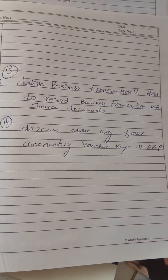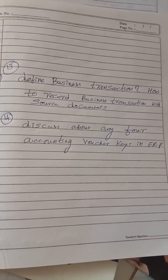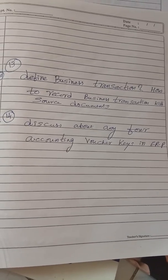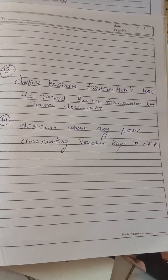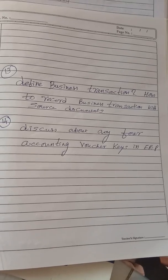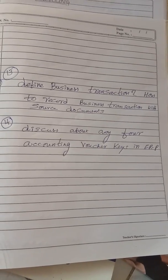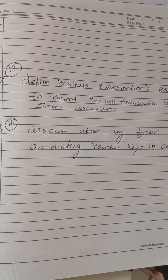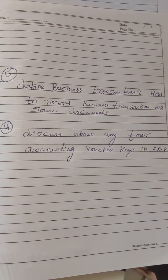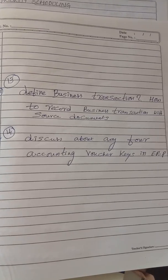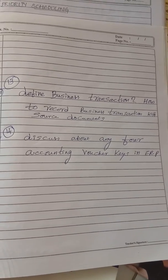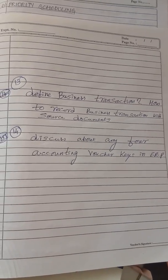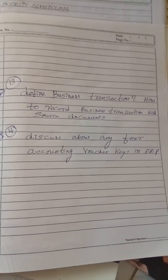The accounting voucher keys are: Contra F4, Payment F5, Receipt F6, Journal F7, General Voucher F8, F9. Once again I am showing you, my dear students.